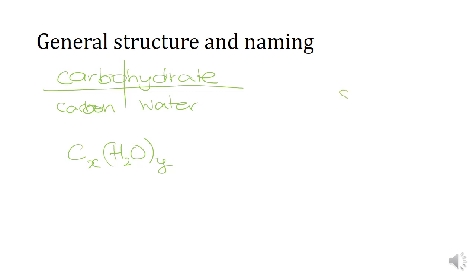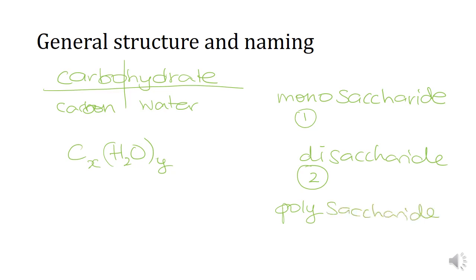We then have the term saccharide. If it's a monosaccharide, I've got one sugar molecule on its own, one carbohydrate molecule. If I take two of those and condensation reaction them, I end up with a disaccharide. If I take a whole bunch and polymer them together, I end up with a polysaccharide.